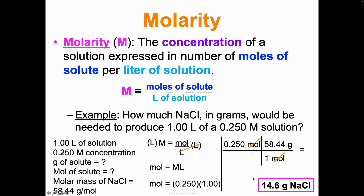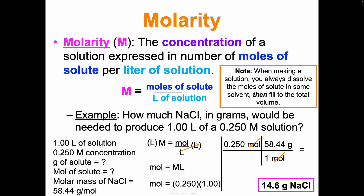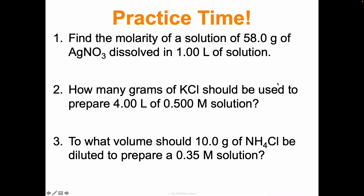That's how much you'd need to make one liter of a 0.250 molar solution. The last step of RADAR is to reflect - does this make sense? You can work the equation backwards to check. Now, one important practical note: when you're in lab making a solution, you always dissolve the grams of solute in some solvent first, then fill to the total volume. So I'm not taking 14.6 grams of NaCl and one full liter of water - I add a little water, mix until it dissolves, then fill until the total volume reaches one liter. That 14.6 grams takes up space; the liter is the total solution, not just the solvent.